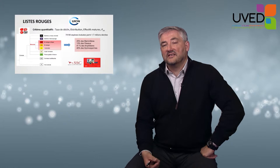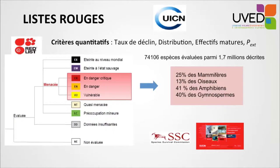This is how red lists have been established by IUCN, in order to determine with quantitative criteria the likelihood of extinction, but also the rate of decline, the distribution, or the mature headcount — the kind of data which is more easily accessible. These quantitative criteria are used to categorize populations based on the level of threat they are submitted to.